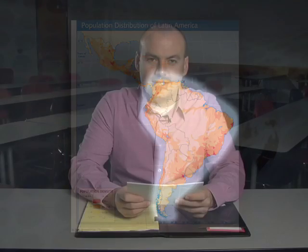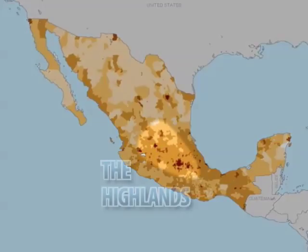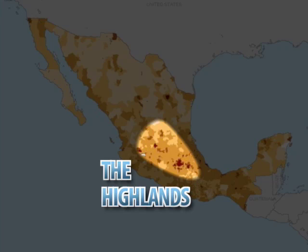An example of how physical environments and population densities are related can be seen in the highlands of Central Mexico. The highlands have fertile volcanic soils, and elevation provides relief from the sweltering temperatures.